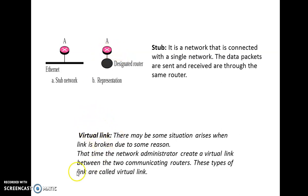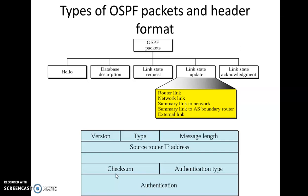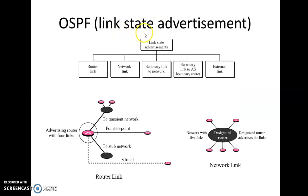The last type is the virtual link. There may be situations where a link is broken for some reason. In that case, the network administrator creates a virtual link between the two community routers, and this type of link is called a virtual link. Regarding link state advertisements, there are different link types: router link, network link, summary link, and summary link to AS external link.